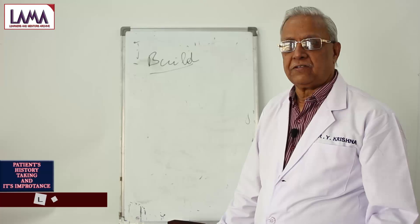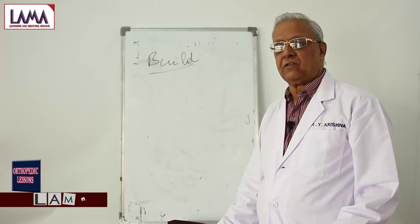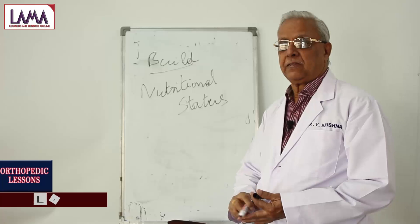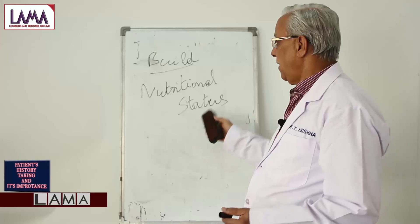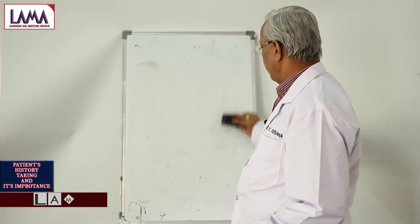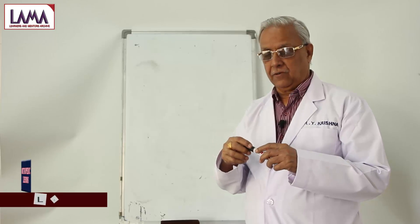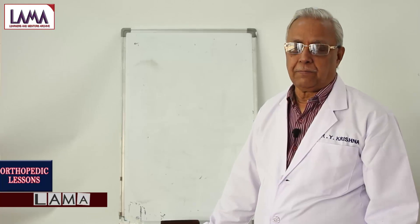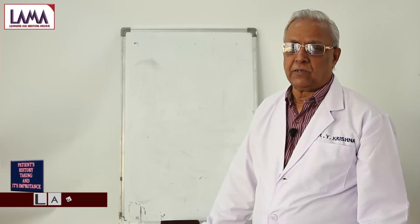Apparently, sometimes a patient looks with sunken eyes, emaciated, anemic — all those things. So the general examination first gives us the build and nutritional status of the person. These two things are very, very important. The build tells us whether the person is obese or not, and the disease and management will alter depending on the build of the particular person, and an emaciated or anemic look is also important.